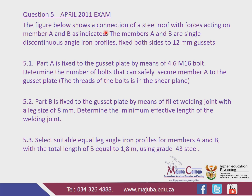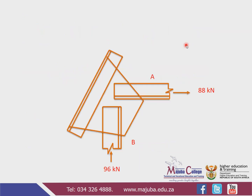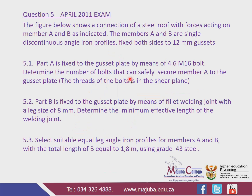To read the whole question: the figure below shows a connection of a steel roof with forces acting on members A and B as indicated. Member A has its dimensions, and member B carries 96 kilonewtons. This is a tie. We are told that members A and B are single continuous angle iron profiles, fixed on both sides to 12 millimeter gusset plates.